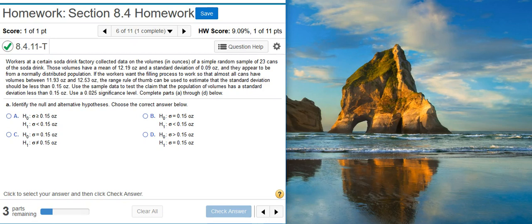If the workers want the filling process to work so that almost all cans have volumes between 11.93 ounces and 12.53 ounces, the range rule of thumb can be used to estimate that the standard deviation should be less than 0.15 ounces.